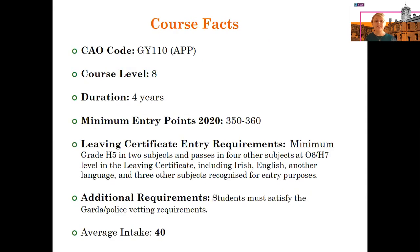Some key facts to be aware of: the CAO code is GY110, but you need to identify APP, which corresponds to the BA in Child, Youth and Family Policy and Practice. It's a level eight qualification, a four-year full-time program. Normal entry points are between 350 and 360. Leaving Certificate entry requirements are a minimum grade H5 in two subjects and passes in four other subjects at O6 or H7, including Irish, English, and one other language or three other recognized subjects. Students must also satisfy Garda vetting requirements, and we usually have an average intake of about 40 students.